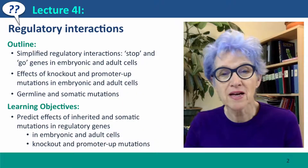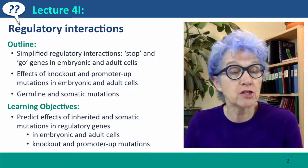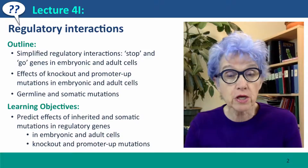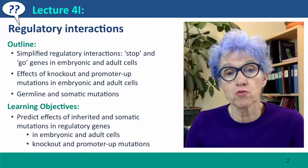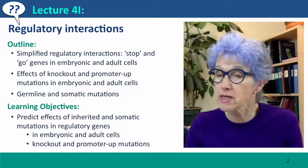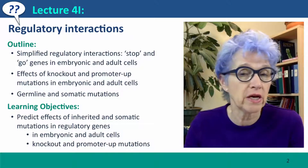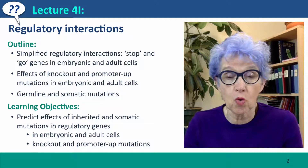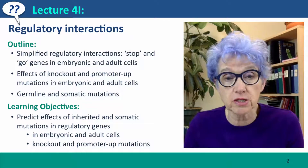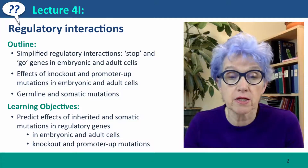Hi everyone, welcome back. This is lecture 4i of Useful Genetics, where we're extending our thinking about genetic interactions between different loci to thinking about interactions involving regulatory genes. We're going to consider a simplified situation that exemplifies most of the key issues, using genes we'll call stop and go, that control cell growth in embryonic and adult cells. We'll consider the effect of different kinds of mutations in both kinds of cells.